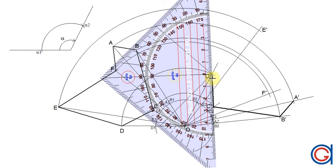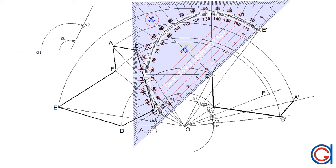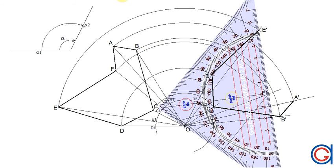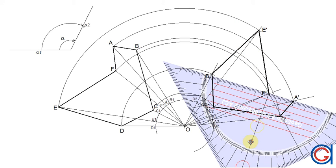Continuing, D prime to E prime, E prime to F prime, and finally F prime back to A prime to complete our irregular hexagon, which we have rotated clockwise with the given angle and the given rotation point O as shown here.